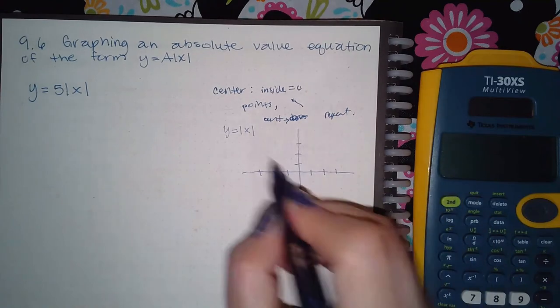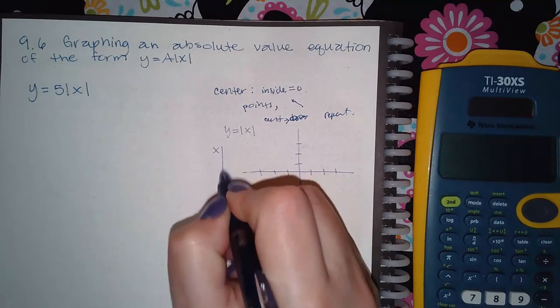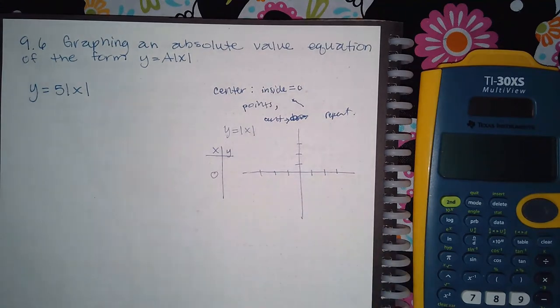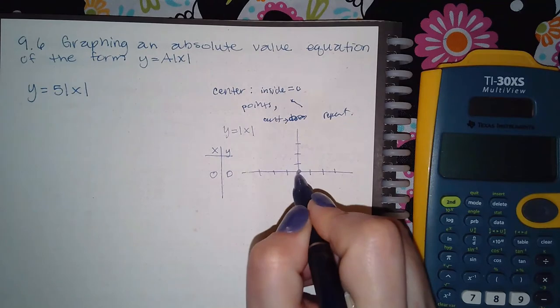When you plug in 0 into this, like if I were to make a chart, and you plug in 0, absolute value of 0 is 0. So that's this point here.